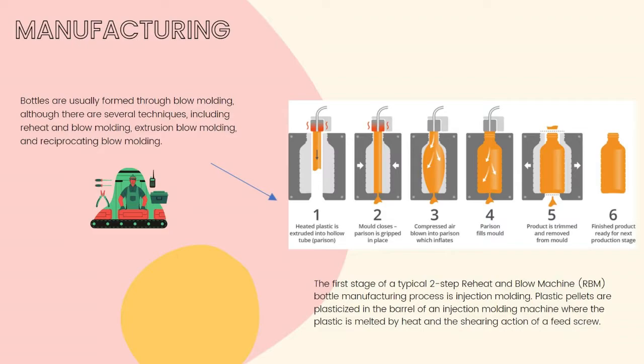In the first stage of a typical two-step reheat and blow molding (RBM) bottle manufacturing process, the step is injection molding. Plastic pellets are plasticized in the barrel of an injection molding machine where the plastic is melted by heat and the shearing action of a feed screw. The plastic is then injected into multiple cavity molds where it assumes the shape of long, thin tubes. These tubes, called preforms, usually include the formed necks and threads that will be used to cap the bottles.